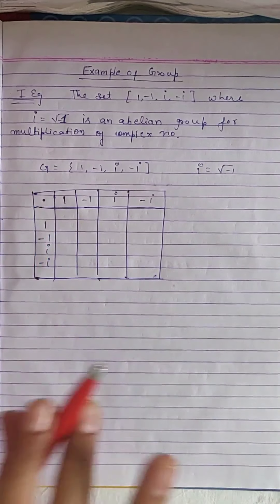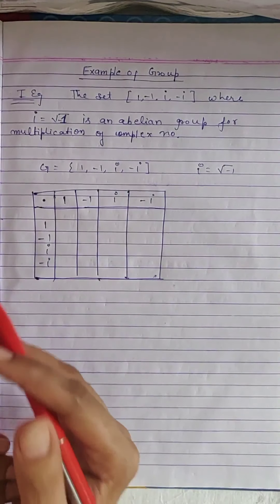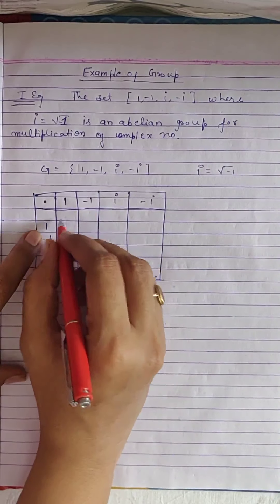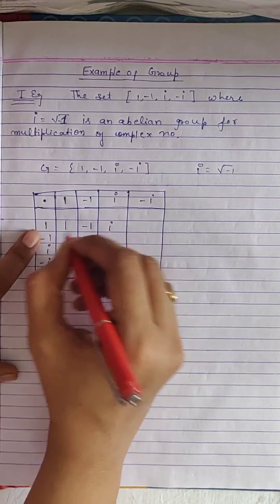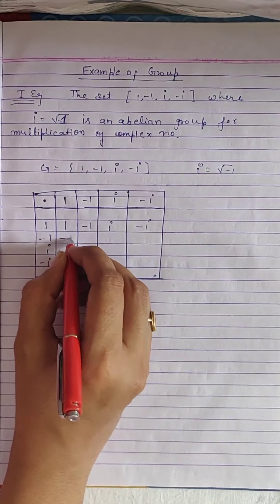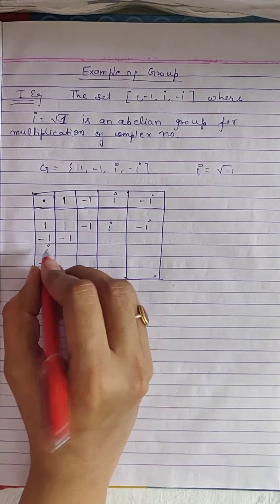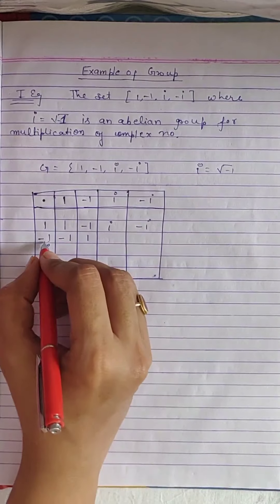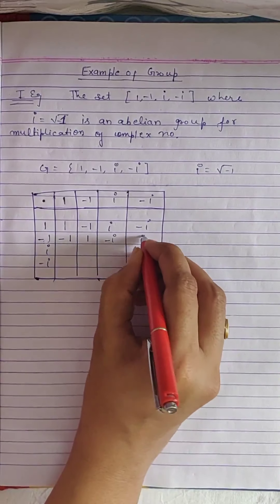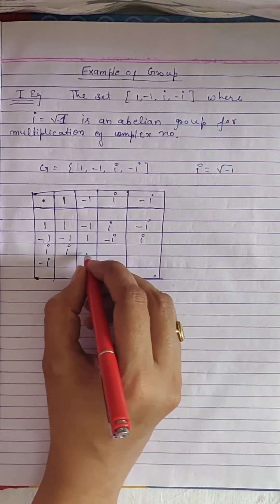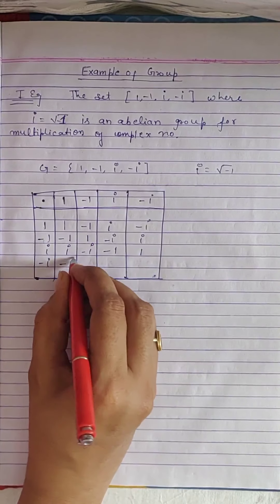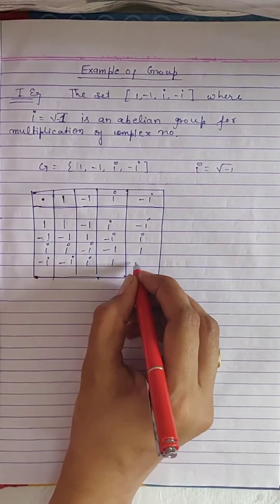1 is the group identity element. The table entries: 1×1=1, 1×(-1)=-1, 1×i=i, 1×(-i)=-i; (-1)×1=-1, (-1)×(-1)=1, (-1)×i=-i, (-1)×(-i)=i; i×(-1)=-i, i×(-i)=1; -i×i=1, -i×(-i)=-1.